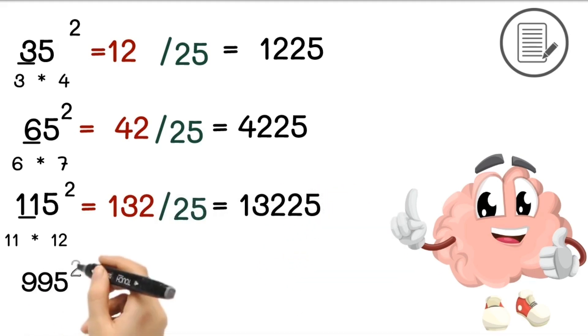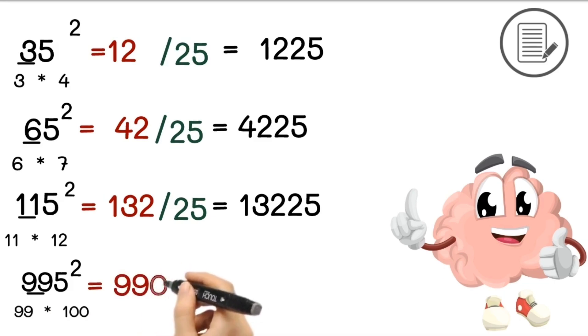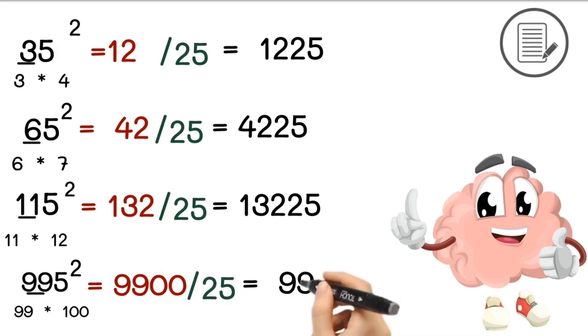Square of 995. Here we will take 99 and the next number is 100. So 99 multiplied by 100 equals 9,900. And the second part is 25. So the square of 995 will be 9,90,025.